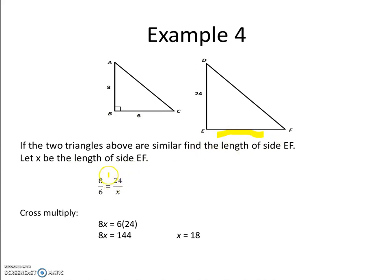So we're setting up the proportion 8 is to 6 equals 24 divided by x. When we cross multiply, we get 8x equals 6 times 24, and 6 times 24 is 144. Dividing both sides by 8, we find that x equals 18.